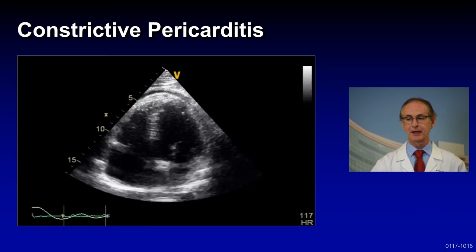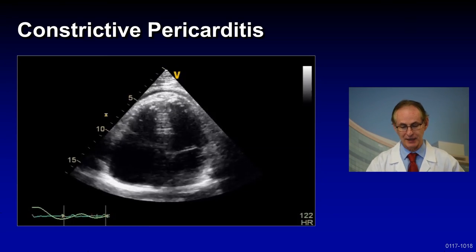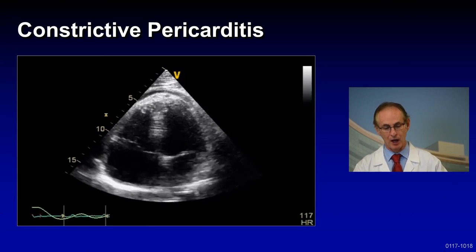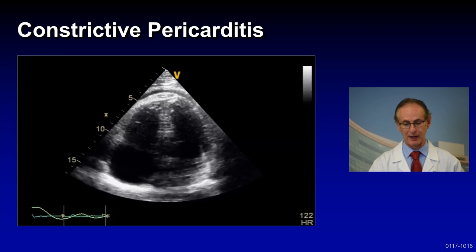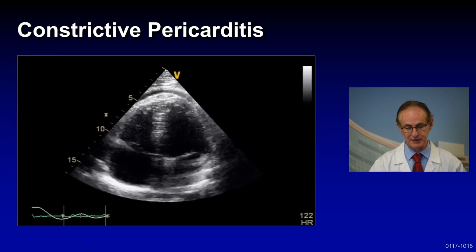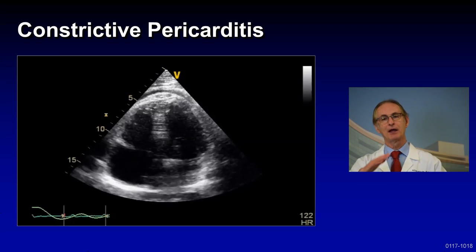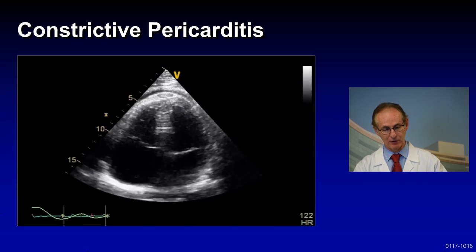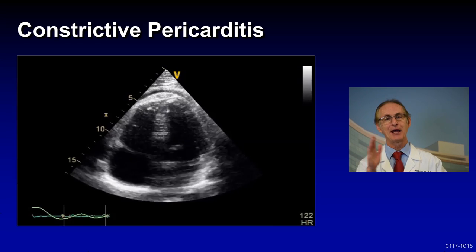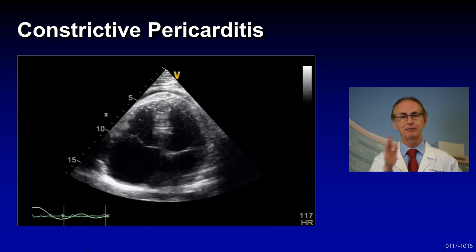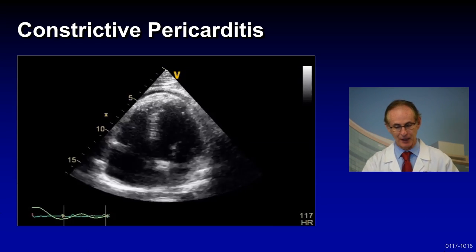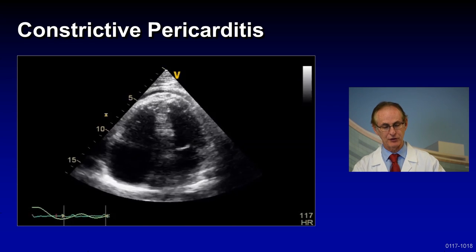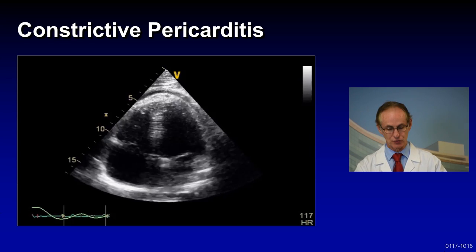Another complicated pericarditis case is constrictive pericarditis. This is an example of a 40-year-old who had a viral illness and developed a fusion around the heart, as you can see on the echo. The patient has a septal bounce and tethering of the heart, and this patient eventually went to surgery.